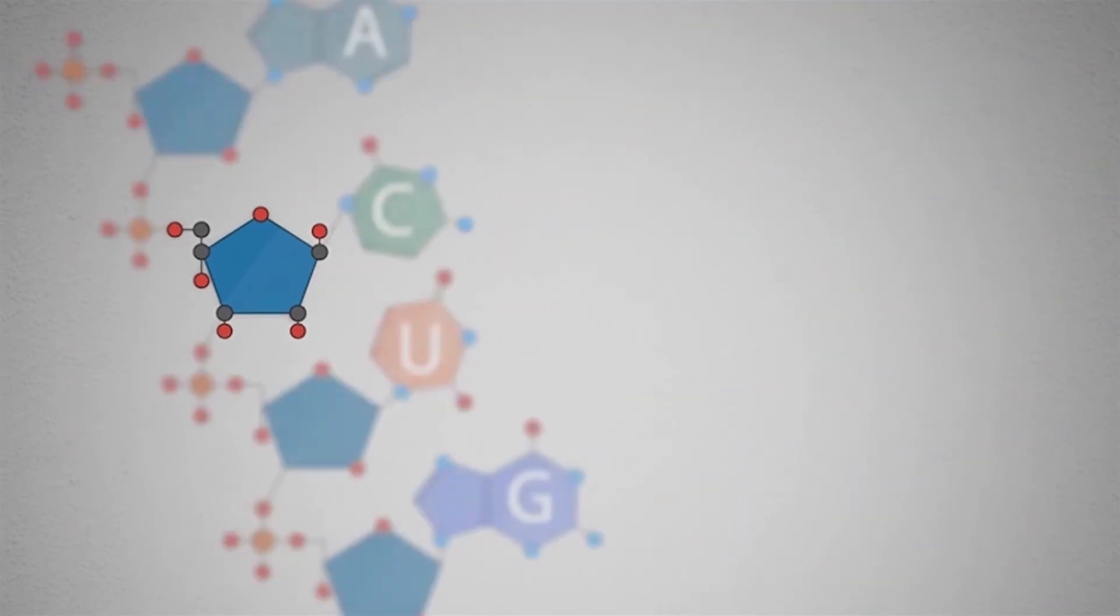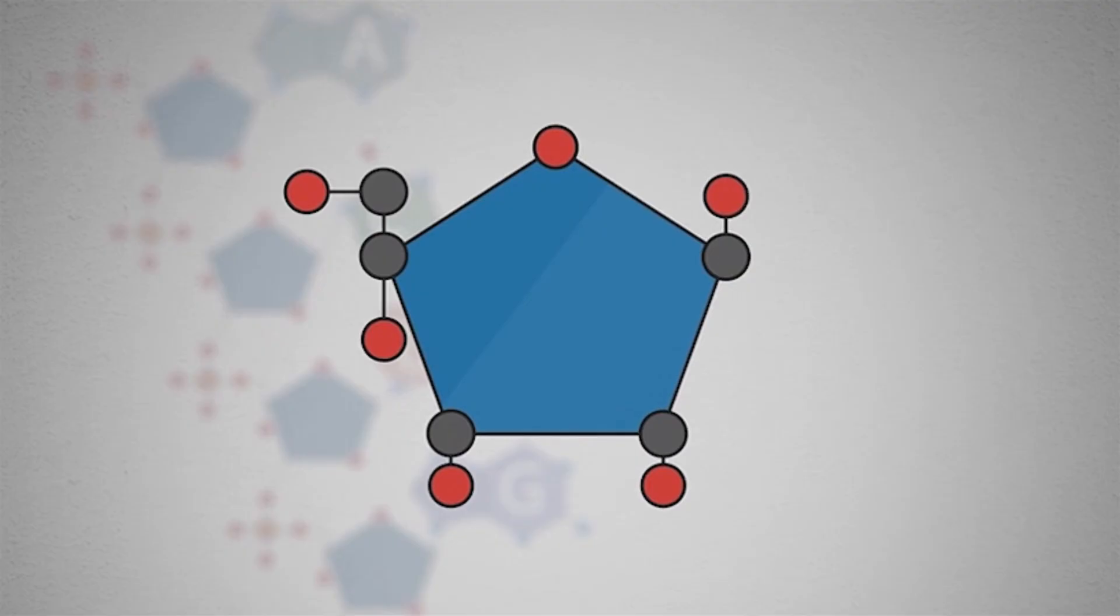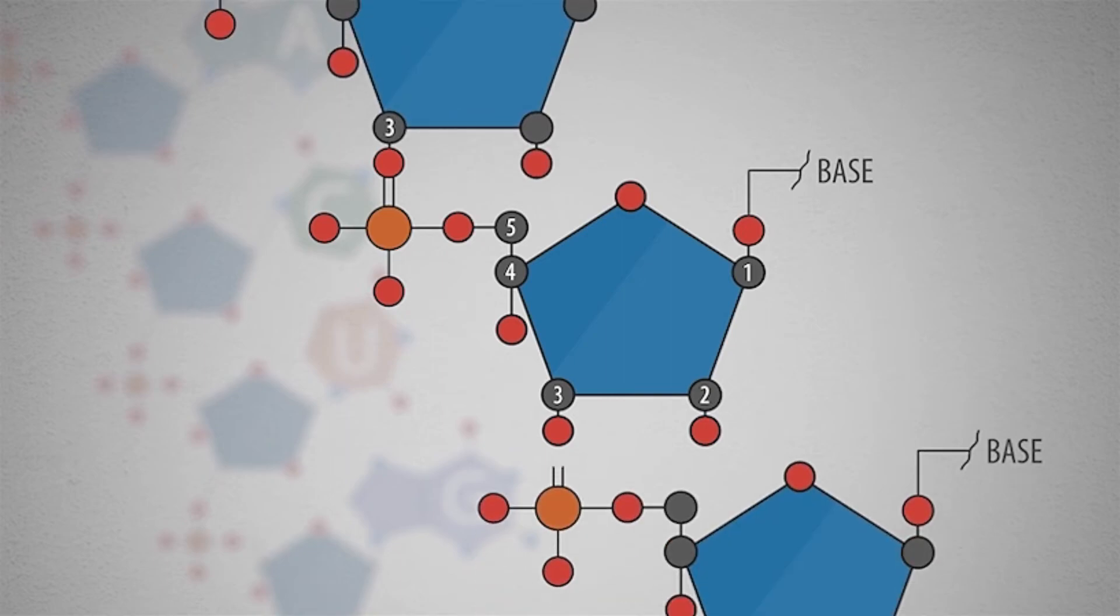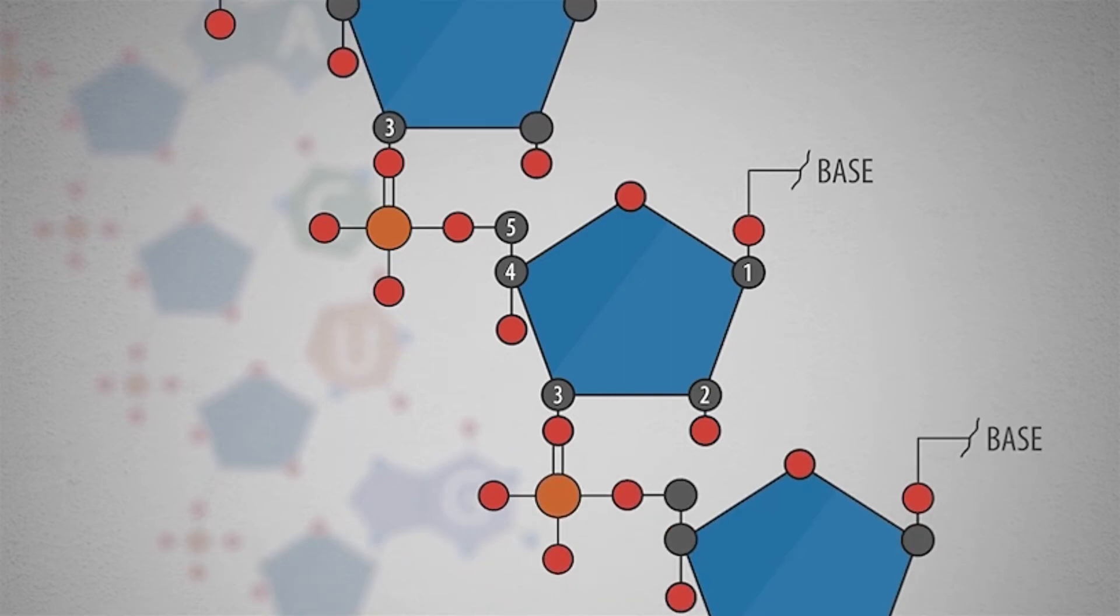For orientation purposes, the carbon atoms in the ribose sugar are numbered one through five with corresponding three-prime and five-prime ends. Adjoining nucleotides add on to the three-prime hydroxyl group of the previous nucleotide.